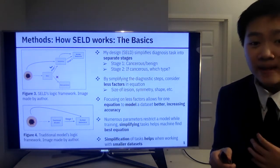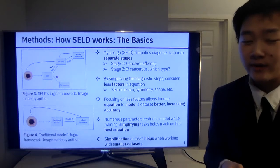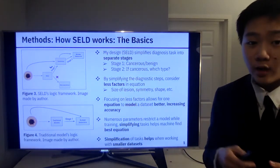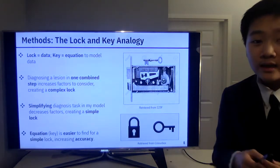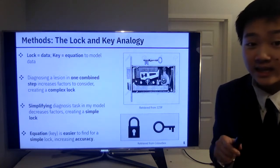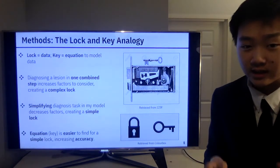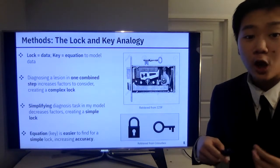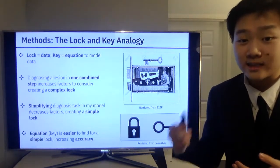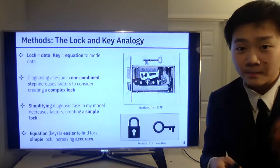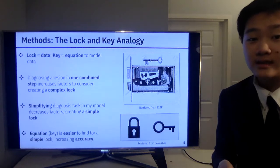In addition, the HAM10,000 dataset I worked with was relatively small at about 10,000 images. A larger amount of data is required to find sufficient patterns for bigger tasks, so simplifying the diagnosis task further benefits the model's accuracy. We can also understand this through the lock and key analogy: the lock is our dataset and factors to consider, and the key is our equation. As you increase the number of factors the lock becomes more complex, and it becomes increasingly difficult to find a key to unlock it. My two-step approach is therefore hypothesized to increase accuracy.